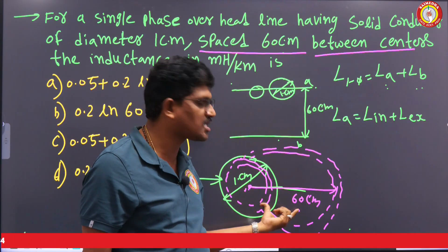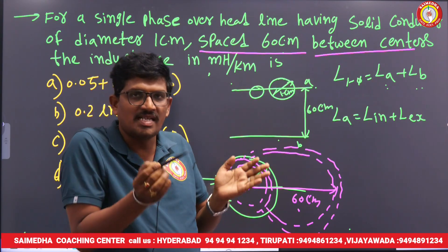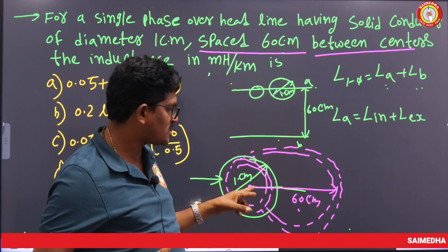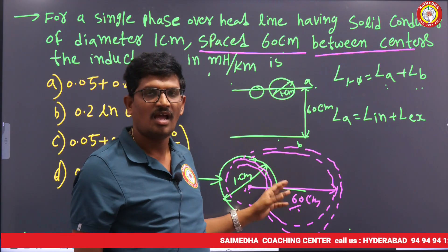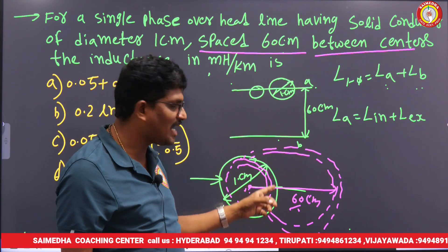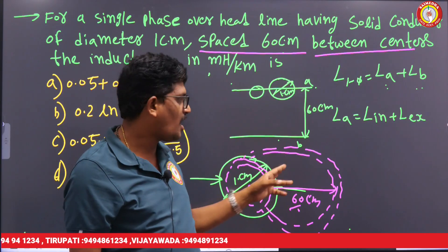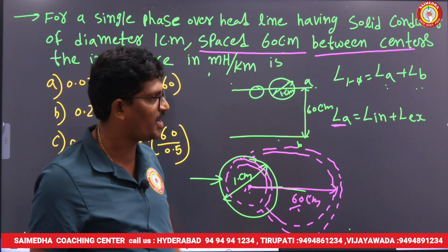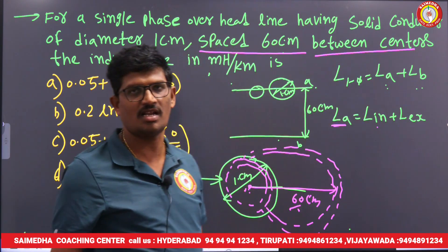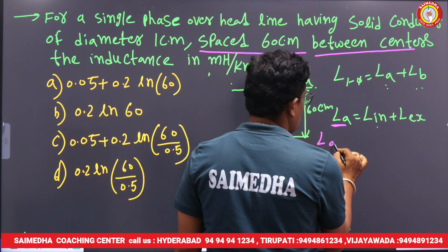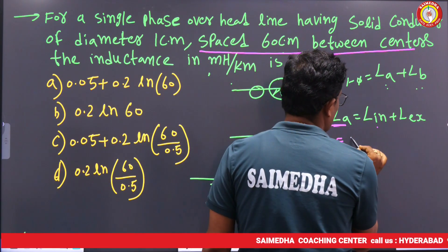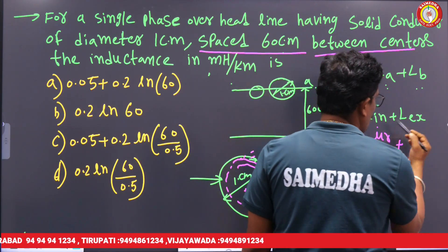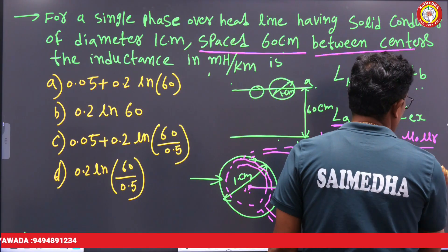In this question, we need to find the inductance of a single conductor — not the full single-phase line inductance. The spacing between the two conductors is 60 cm. The formula for inductance in a single conductor is: La = internal inductance + external inductance. The formula for internal inductance is μ₀μᵣ / 8π, and the external inductance is (μ₀μᵣ / 2π) · ln(d/r).